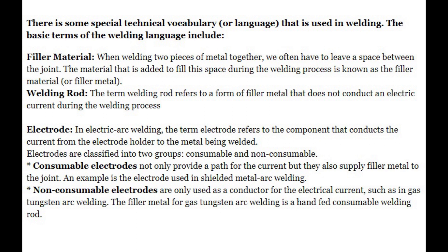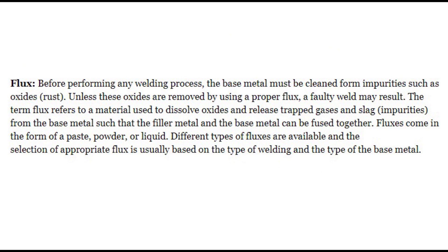The filler metal for gas tungsten arc welding is a hand-fed consumable welding rod. Flux: Before performing any welding process, the base metal must be cleaned of impurities such as oxides. Unless these oxides are removed by using a proper flux, a faulty weld may result. Flux refers to a material used to dissolve oxides and release trapped gases and slag impurities from the base metal, so that the filler metal and base metal can be fused together. Fluxes come in the form of a paste, powder, or liquid, and selection is usually based on the type of welding and the type of base metal.